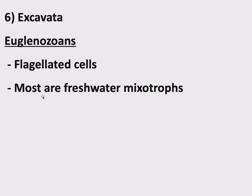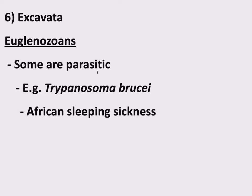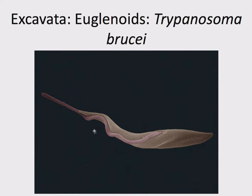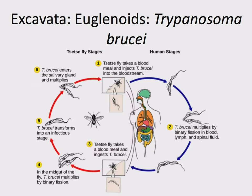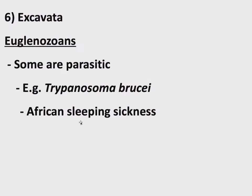Not all of them are freshwater mixotrophs — there is a very notable parasite within this group, Euglenozoa. Some of them are parasites. The notable member is Trypanosoma brucei, responsible for African sleeping sickness. There's the trypanosome in single-celled form — not that interesting to look at. There's also the infection cycle. Malaria has it beat as far as complexity goes, but this is another thing where the tsetse fly is spreading it, not a mosquito. It's a very horrible disease — it causes neurological symptoms including issues with sleep regulation, hence the name sleeping sickness. You should be aware that Trypanosoma brucei is responsible for African sleeping sickness and is a parasite in the group Euglenozoa.